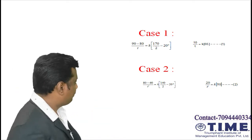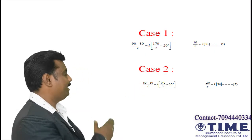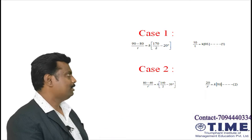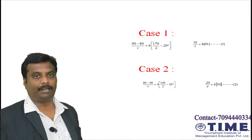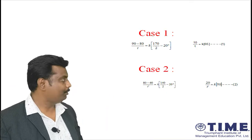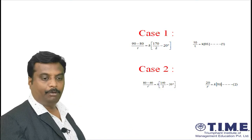Second case: temperature changes from 80 to 60. (80 - 60)/t' = k[(80 + 60)/2 - 20]. This is 140/2 minus 20, so simplifying we get 20/t' = k × 50.